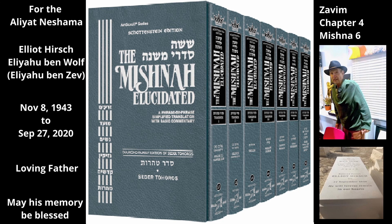Chapter 5, Chapter 4, Mishnah 6. The Mishnah continues to discuss a Zav who transmits Tumah through a scale. However, the previous Mishnah deals with a Zav on a scale who makes a bed or seat Tameh with Midras, while our Mishnah deals with a Zav on a scale who makes an item Tameh with Hesed.